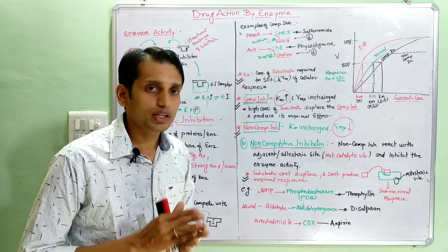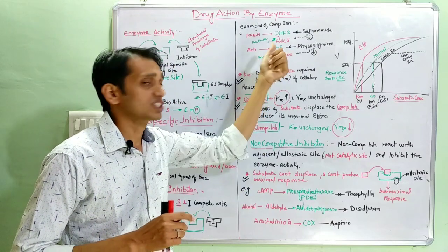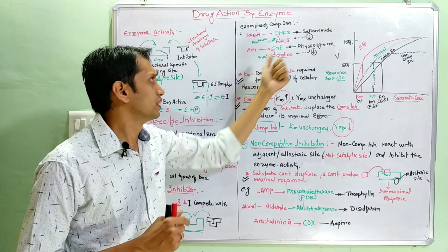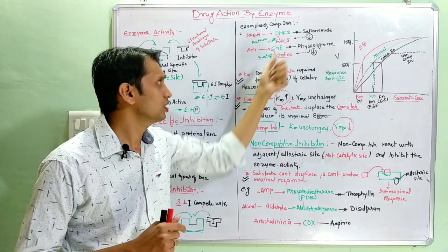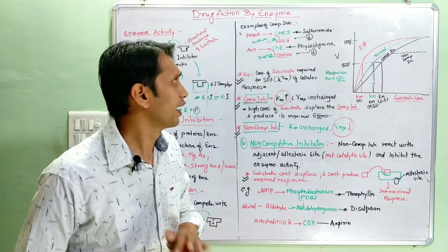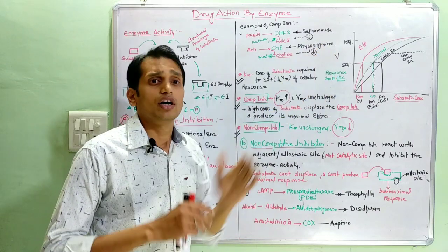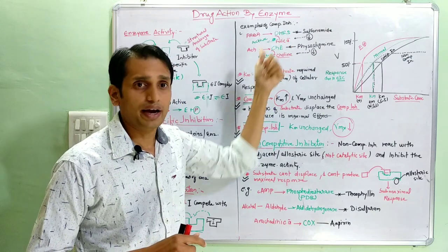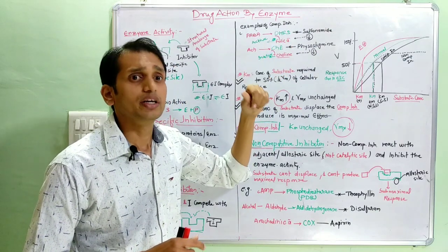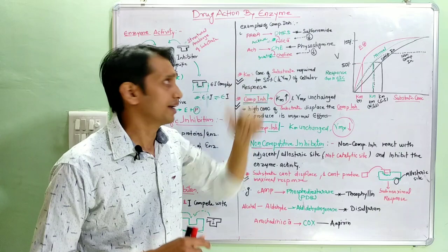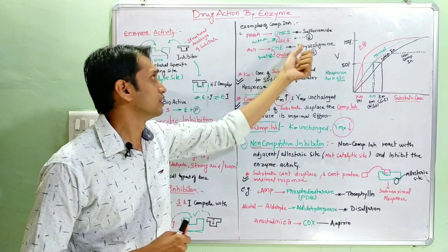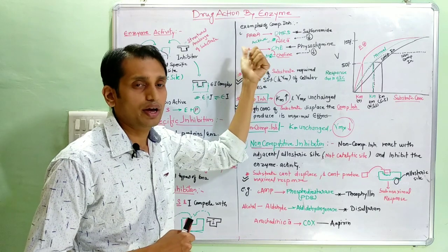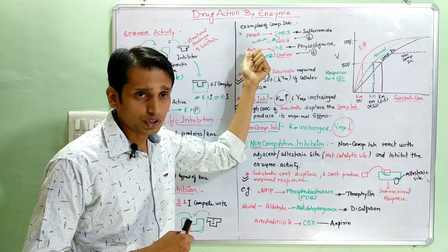Another example: acetylcholine is the substrate and cholinesterase is the enzyme. The cholinesterase enzyme mainly degrades acetylcholine to choline. Physostigmine is a competitive inhibitor of cholinesterase — it inhibits this enzyme, decreases the degradation of acetylcholine, and thereby increases the bioavailability of acetylcholine and its response.